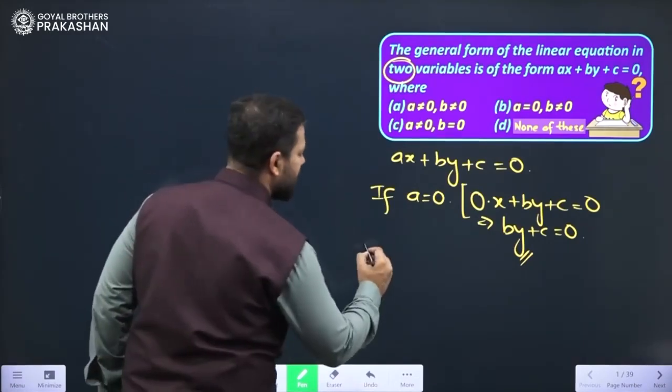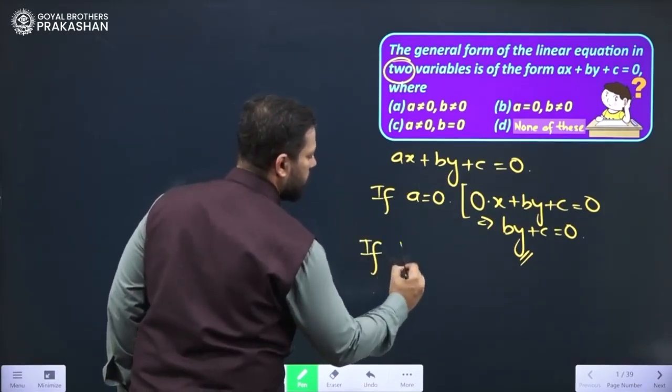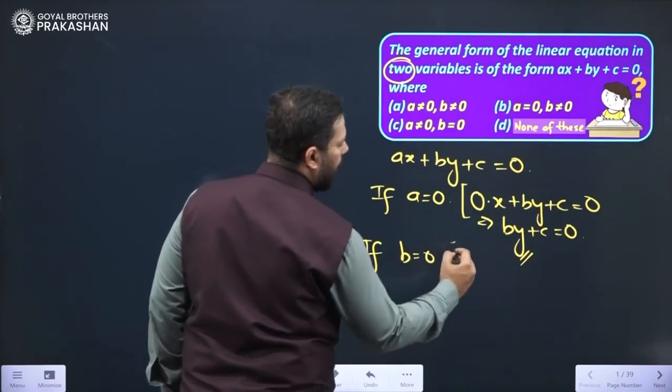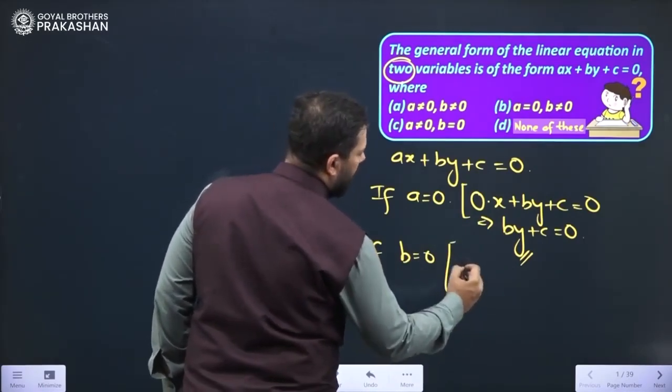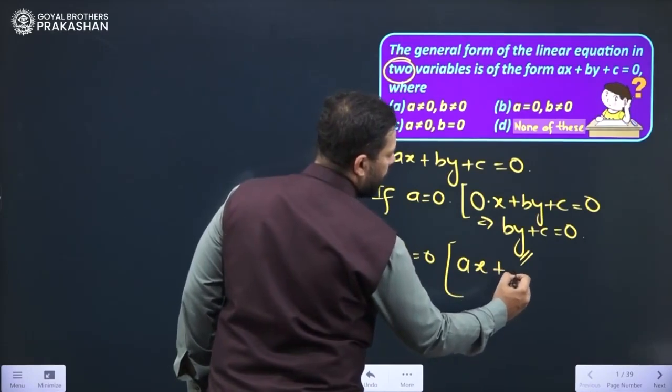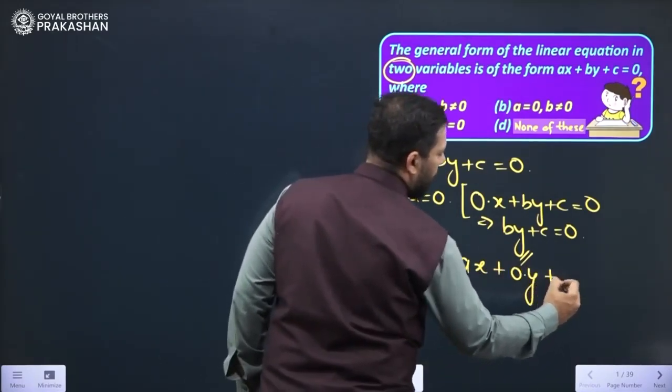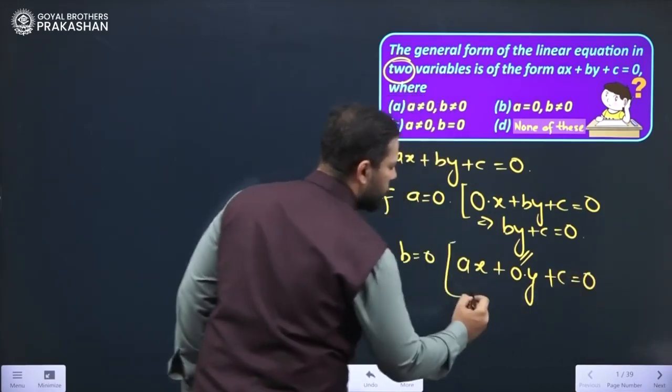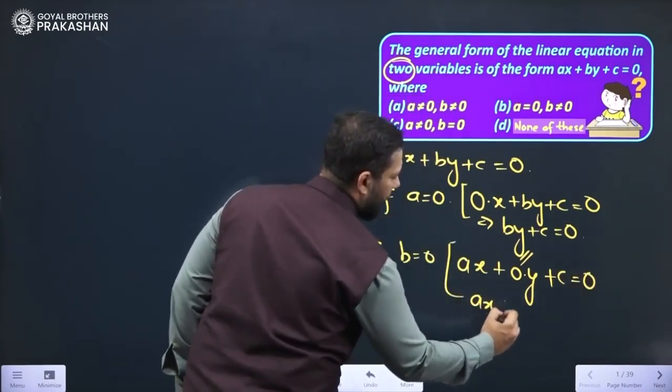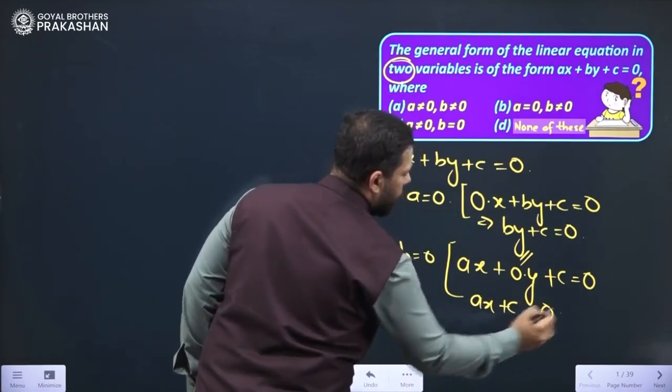If suppose we take b as 0, let us also try to substitute b equals to 0. In that case what would happen? Ax will remain same. But in place of b if I write 0 it becomes 0 times y added with c. And this will result into ax plus c equals to 0.